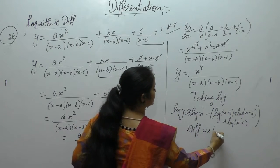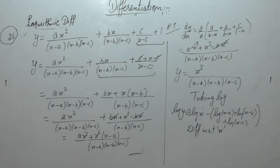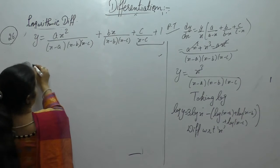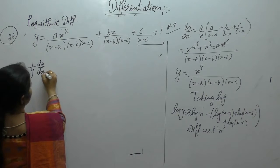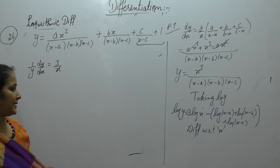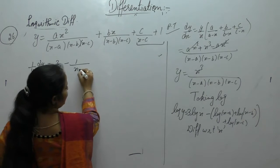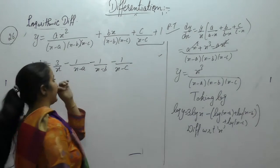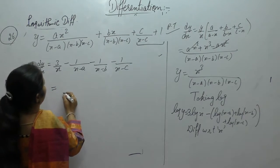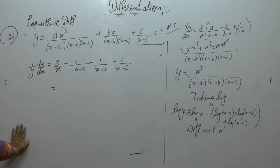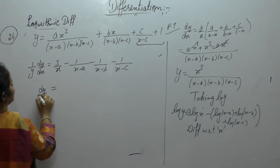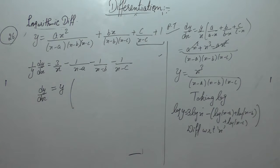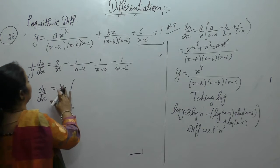Now differentiate with respect to x. What we get: (1/y)·(dy/dx) = derivative of 3·log x gives 3/x, minus derivative of log(x-a) gives 1/(x-a), minus log(x-b) gives 1/(x-b), minus log(x-c) gives 1/(x-c).